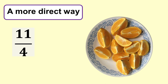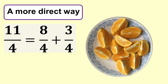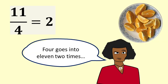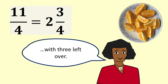Here is a more direct way to do this. Here are eleven quarters of orange. We ask, how many lots of four can we get out of eleven? And the answer is two lots of four, which makes eight, with three quarters left over. Two times four is eight plus three makes eleven. Or we say, how many fours in eleven? Four goes into eleven two times, with three quarters left over.